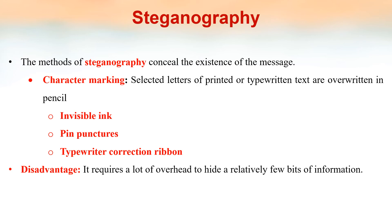Steganography: the methods of steganography conceal the existence of the message. Different types of concealment include character marking — selected letters of printed or typewritten text are overwritten in pencil — using invisible ink so the message cannot be seen, pin punctures, and typewriter correction ribbon. The disadvantage is that it requires a lot of overhead to hide a relatively small amount of information.